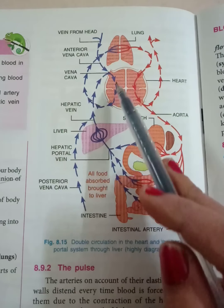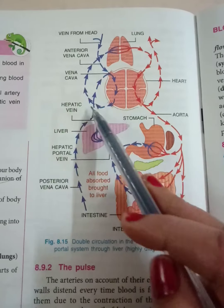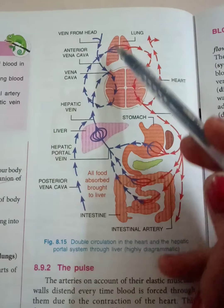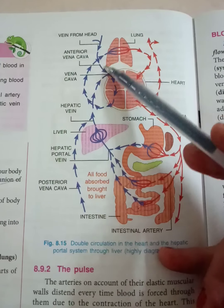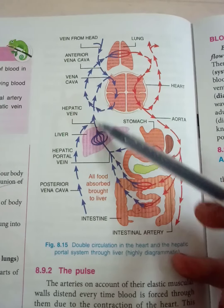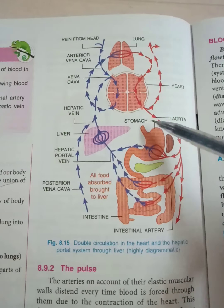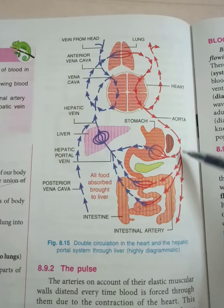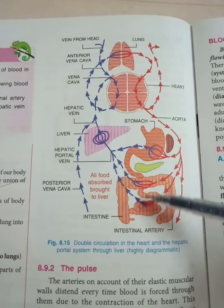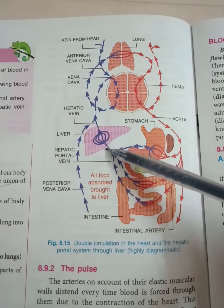From the inferior vena cava, blood goes to the right auricle, then to the right ventricle, and is carried to the lungs for oxygenation. The vein from the head is the anterior vena cava, shown with blue dotted lines and blue arrows. The red arrows show oxygenated blood being brought to the digestive system.